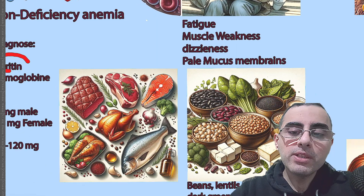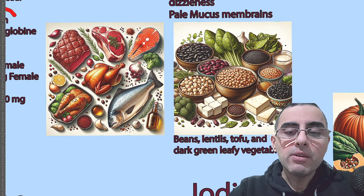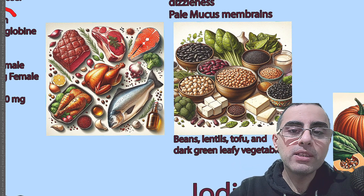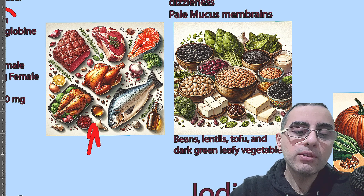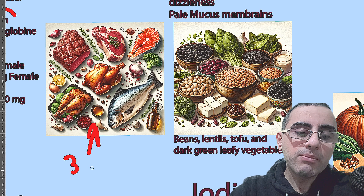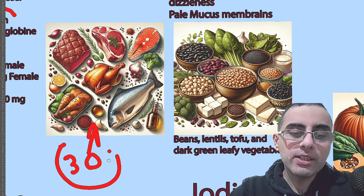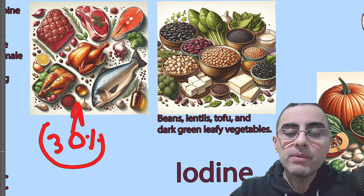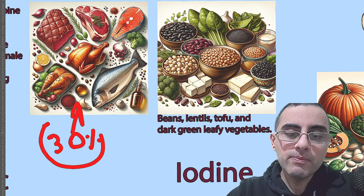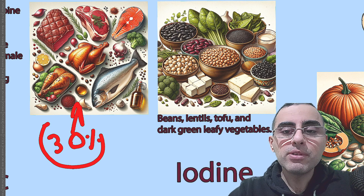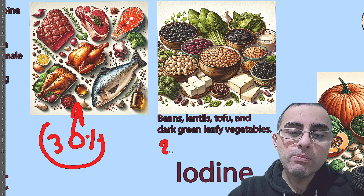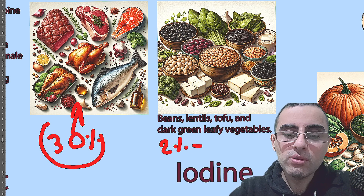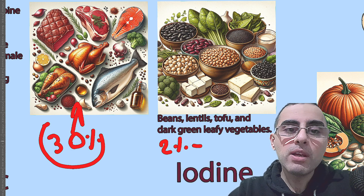Now let's look at which foods contain iron. We have two types of iron. One is conjugated with protein and is called heme iron, and the other is non-heme iron. Heme iron is better — it is absorbed at around 30 percent of what you intake. Non-heme iron absorption is inhibited and only around two percent of such iron can be absorbed from those sources.